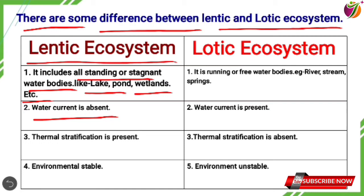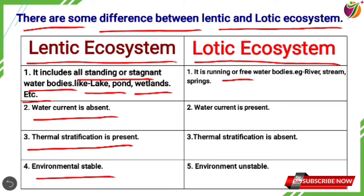Thermal stratification is present, and the environment is stable in Lentic Ecosystem. Lotic Ecosystem refers to running or free water bodies — for example, rivers, streams, and springs.